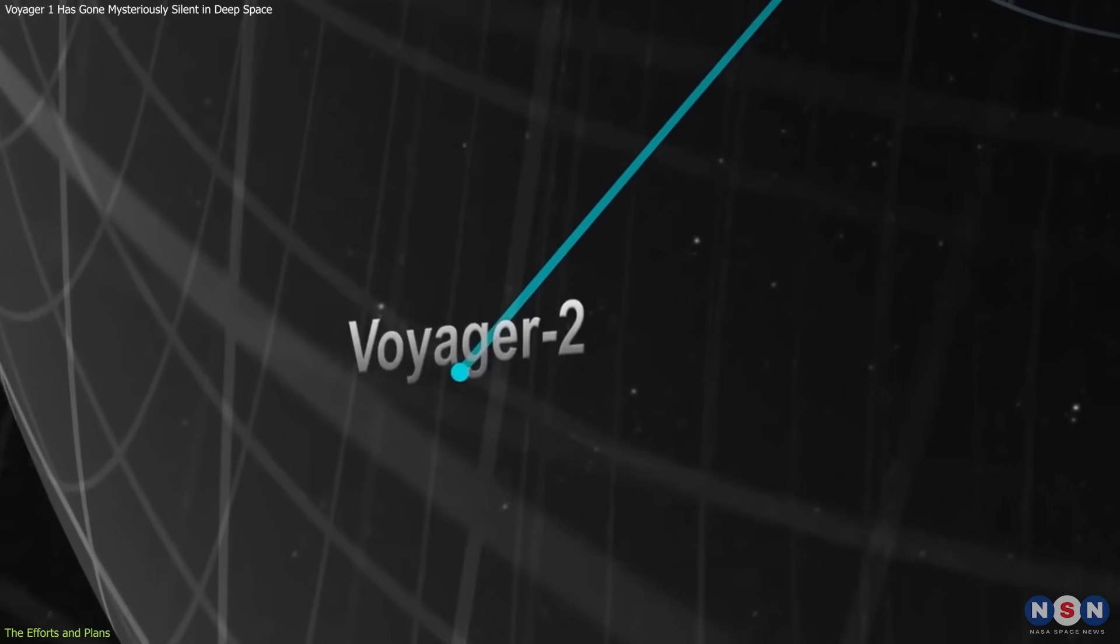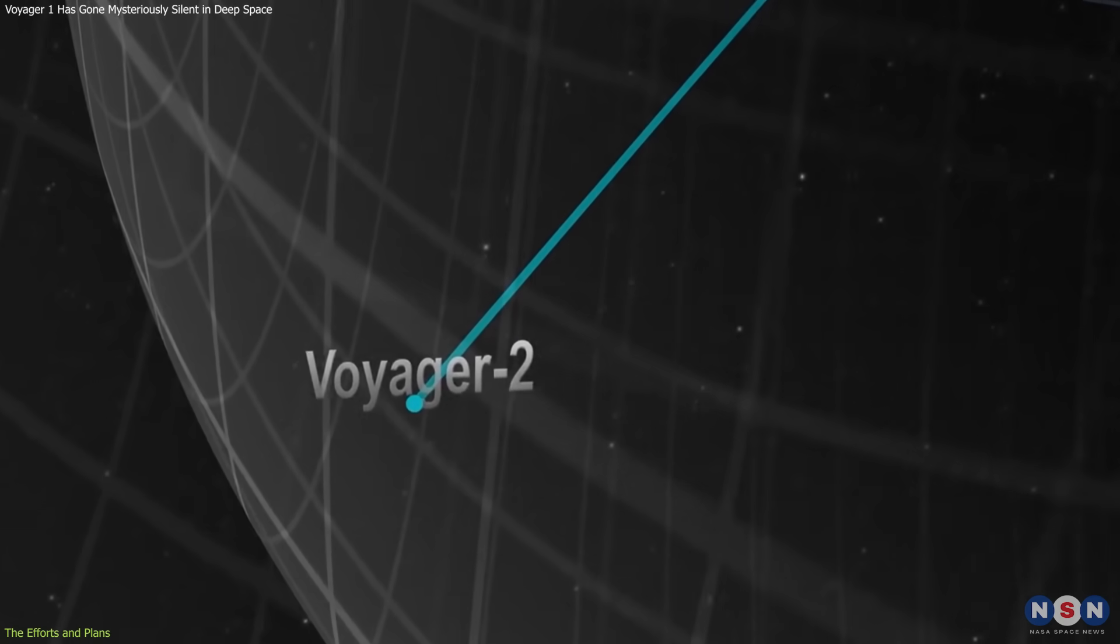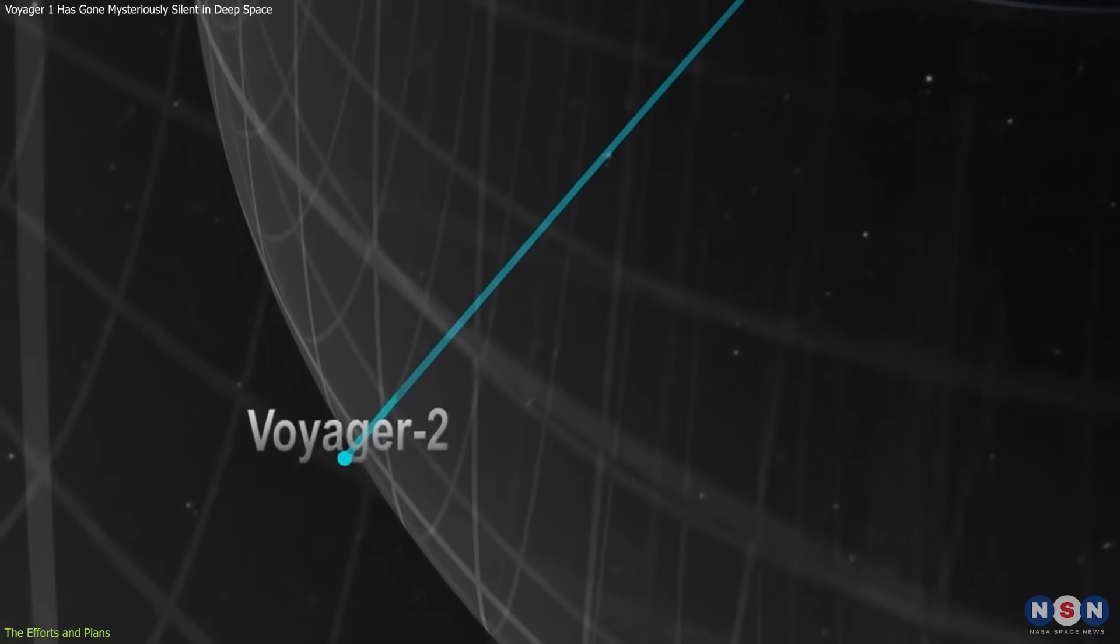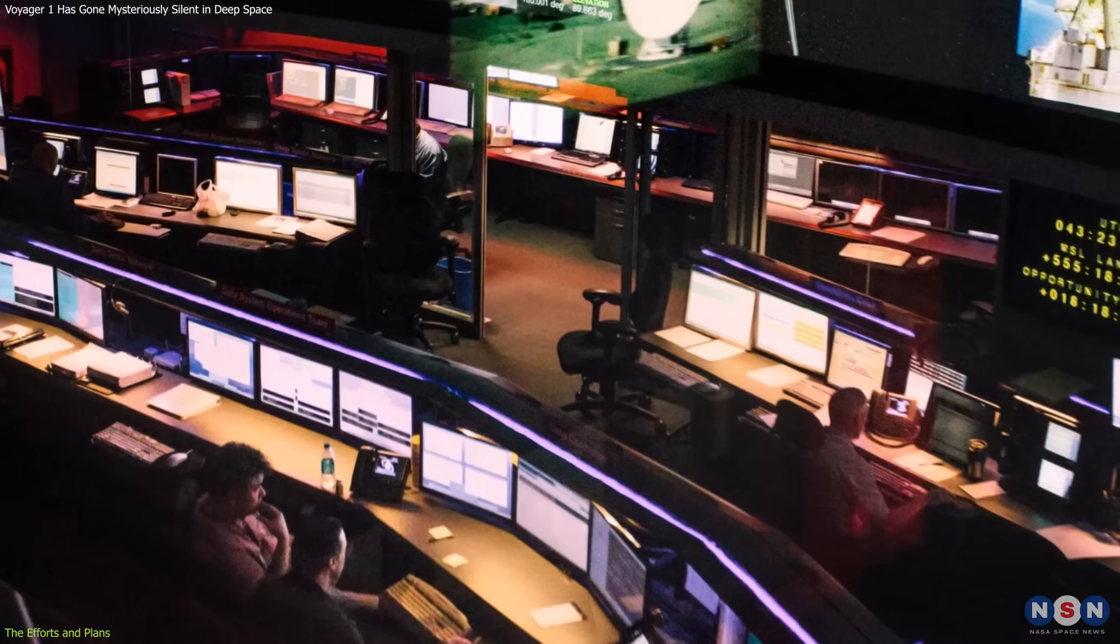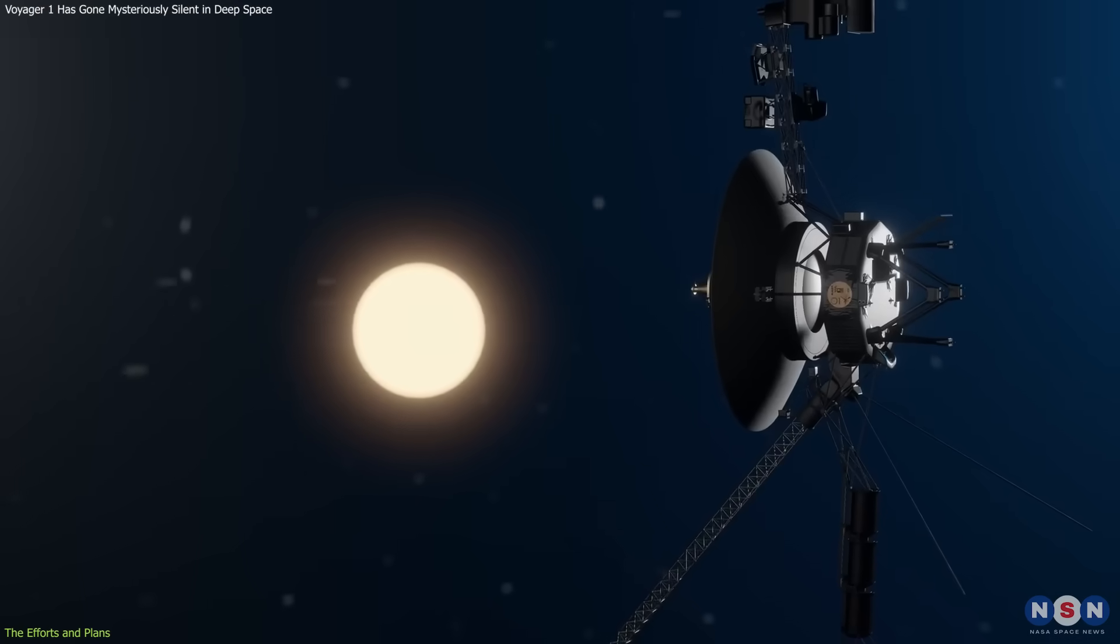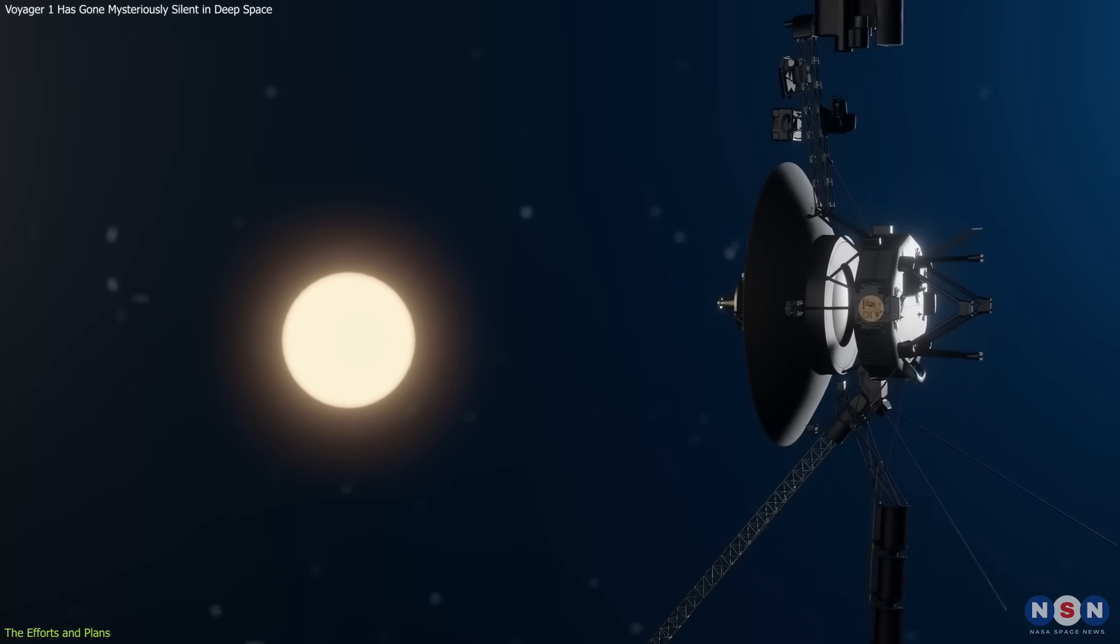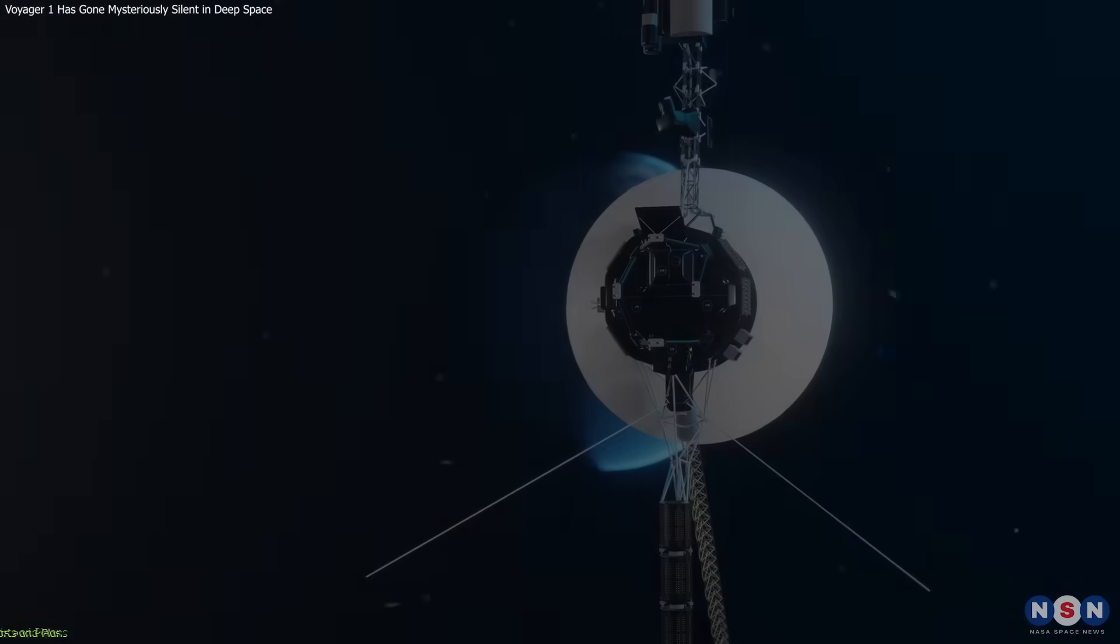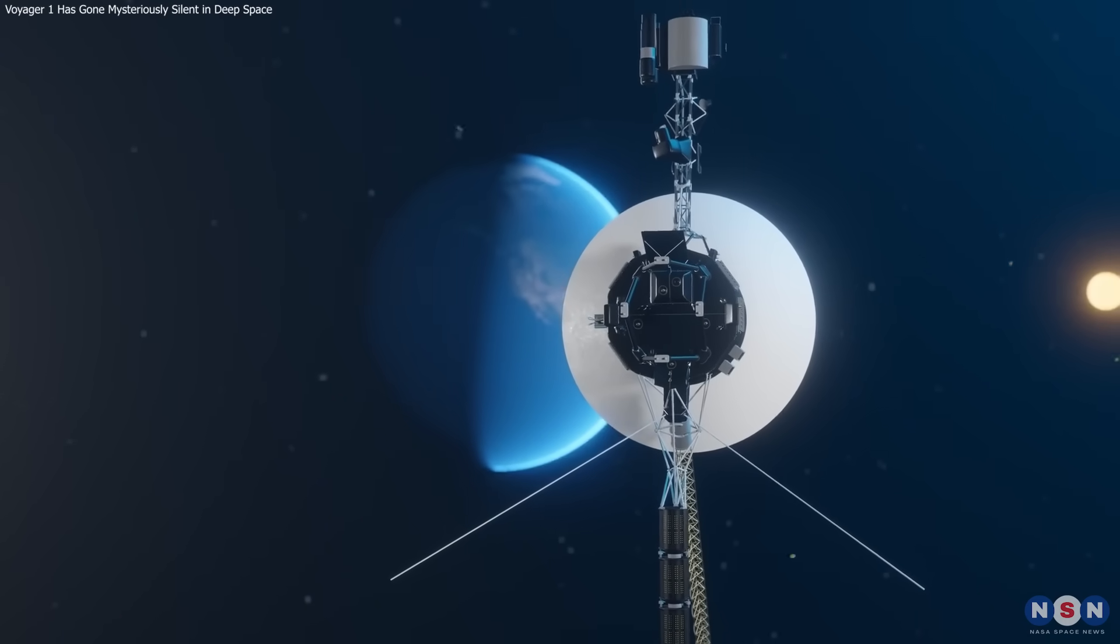Voyager 2 entered interstellar space in 2018, becoming the second human-made object to do so. The mission team is monitoring and maintaining both spacecraft, and they are planning to continue the Voyager mission until at least 2025, when the power source is expected to run out.